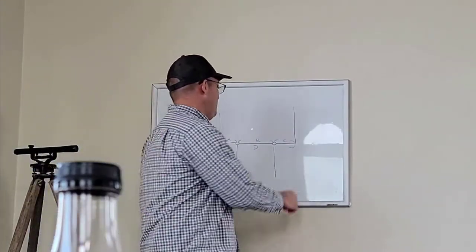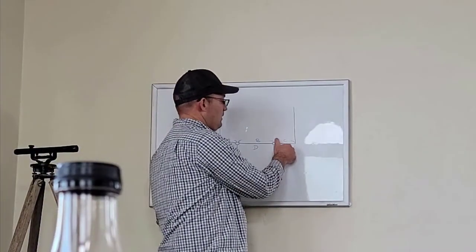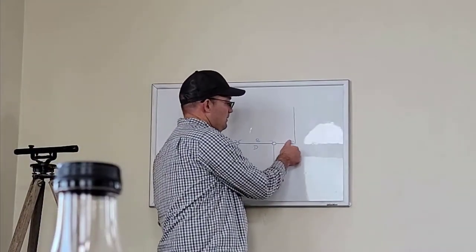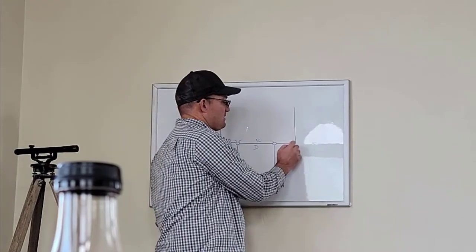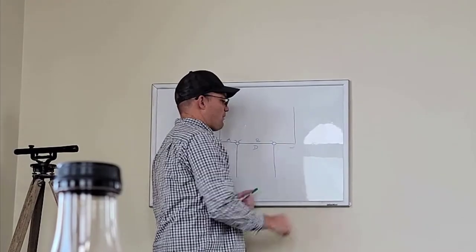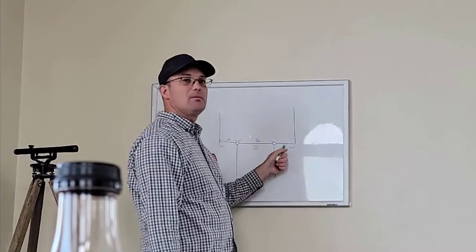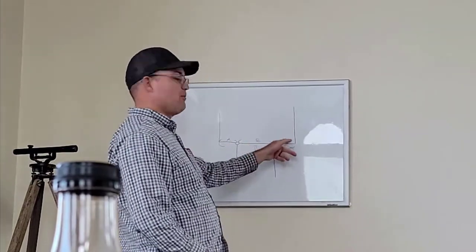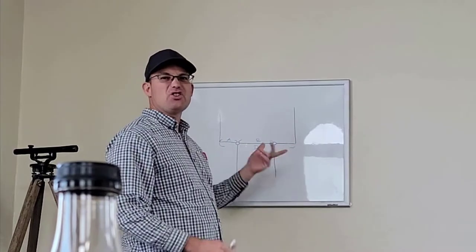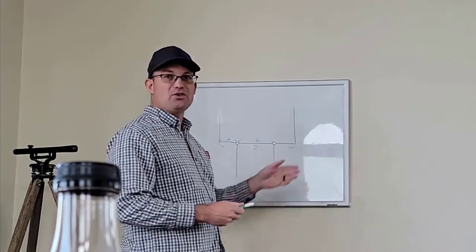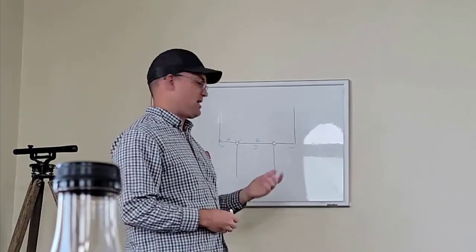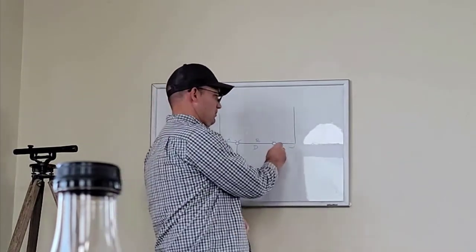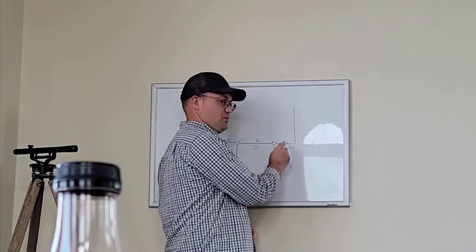Something like this is what I call an orphan segment — it doesn't have a label. As a general rule, you'll see that on maps sometimes, but we don't do that as a general rule.